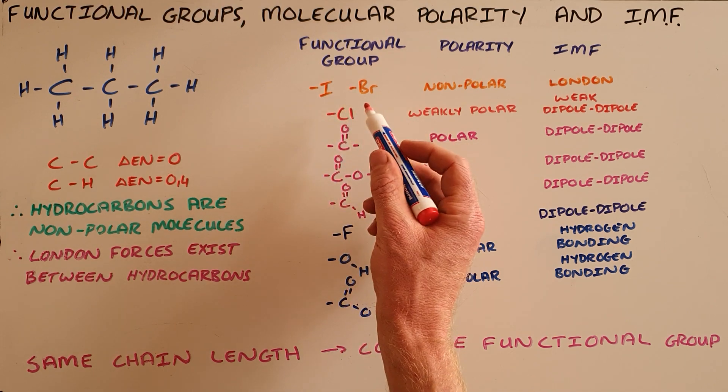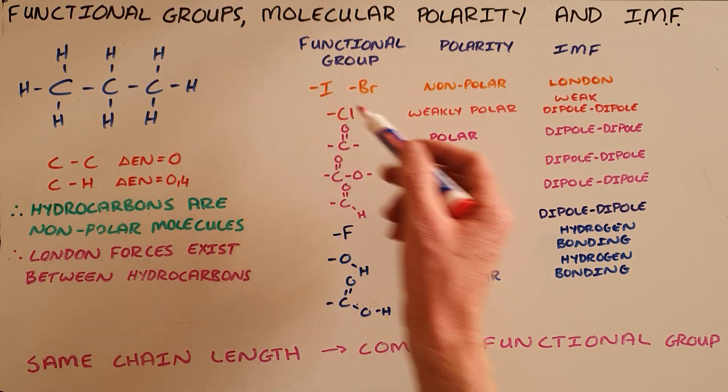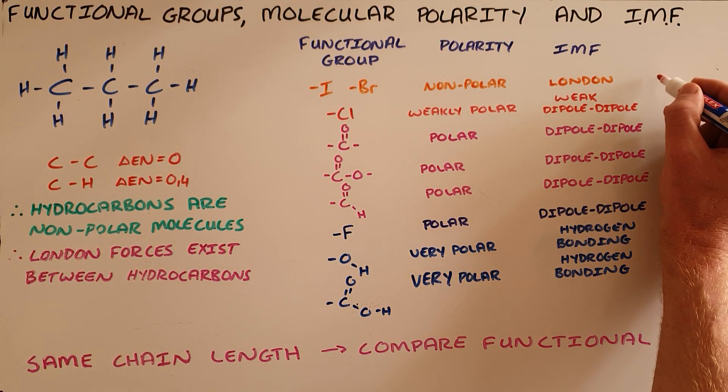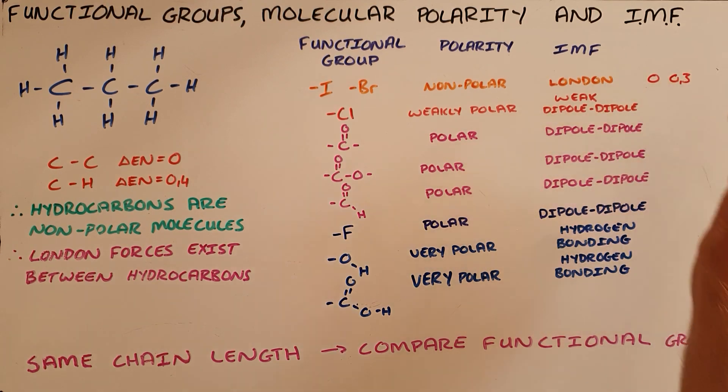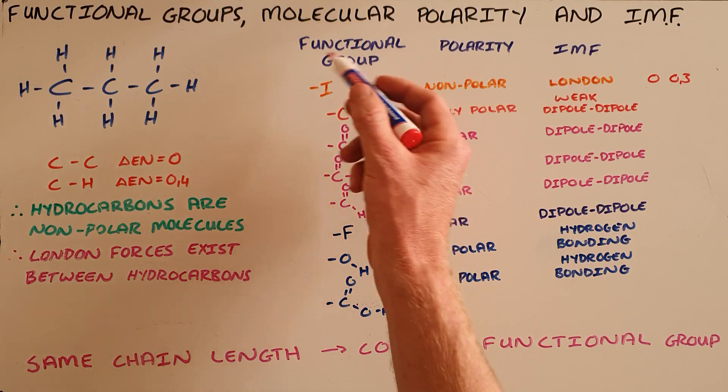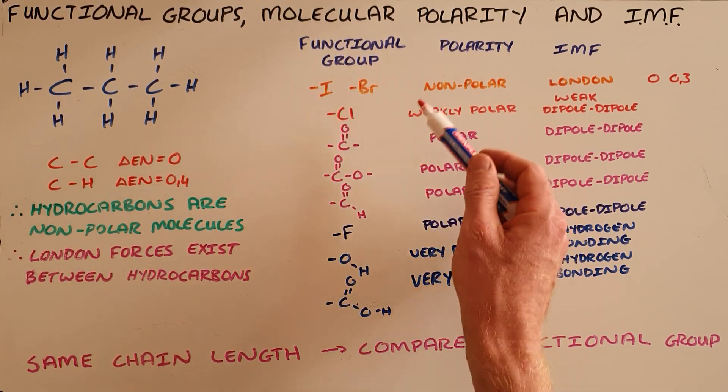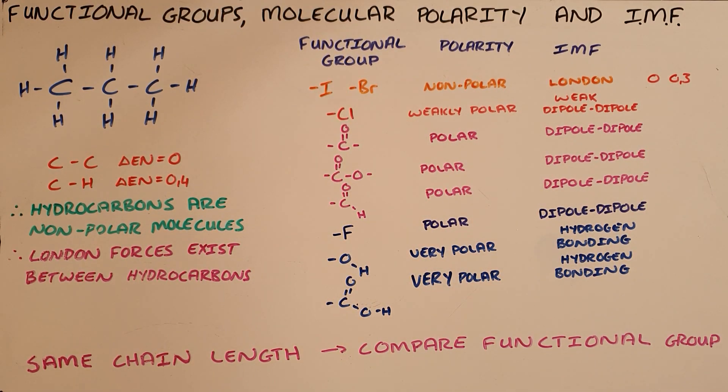The halogens iodine and bromine are also non-polar because they have such a small electronegativity difference, those being 0 and 0.3 respectively, that we say that any molecule containing one of these groups is also non-polar, and as a result, the intermolecular forces are London forces.